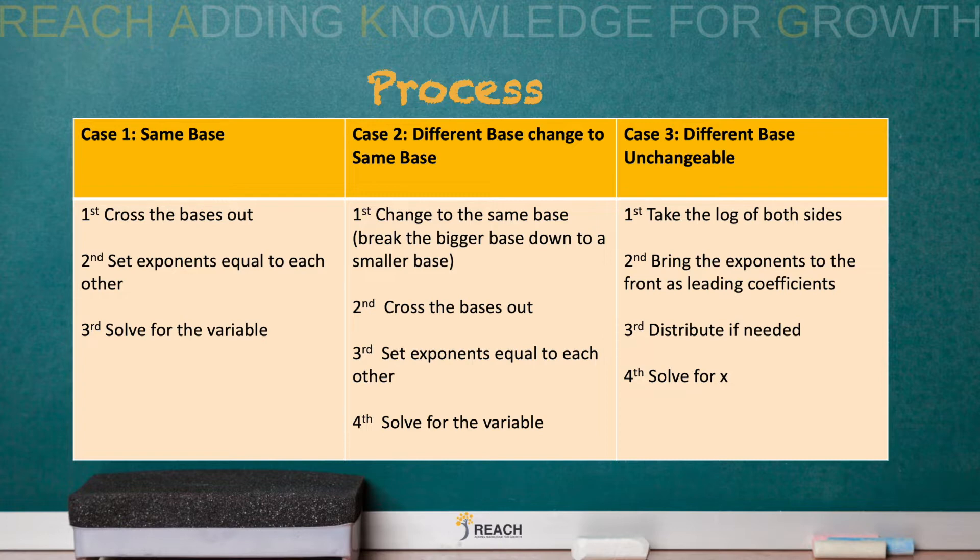Case two is when you have different bases that are able to be changed to the same base. So you're gonna change it to the same base, always break the bigger base down. You'll see an example. Then you go back to step or the case one rather, which is cross out the bases, set the exponents equal to each other, and then solve for the variable.